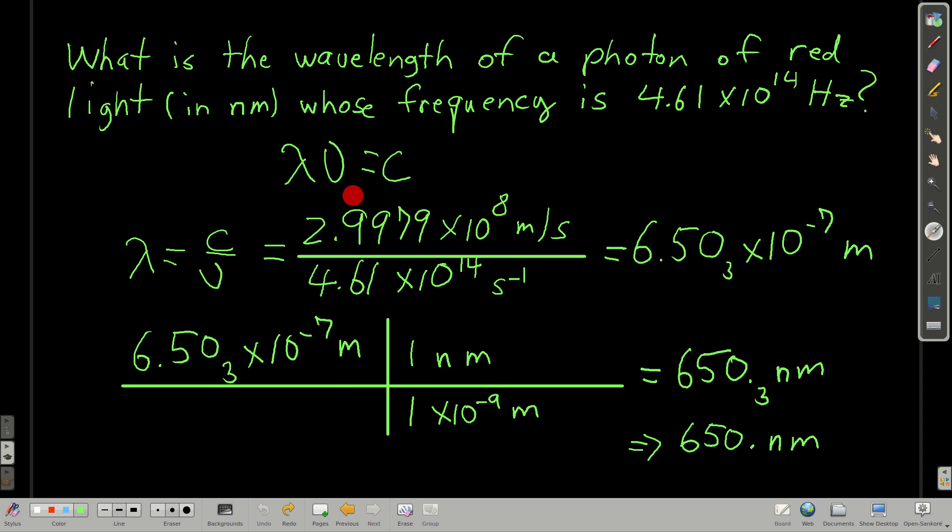Well, we just plug into this equation here, lambda times nu is equal to C. Solve for lambda because we're asked for the wavelength. Remembering that C, the speed of light is a constant that we know, going to memorize. Plugging in the frequency down here, notice hertz, inverse seconds are the same. And we get the wavelength, but it's in meters, right? That's how the units work out here. 6.50 times 10 to the minus 7th meters. And then converting into nanometers, we just replace the prefix nano with what it means, times 10 to the minus 9th. You use it as a conversion factor. And we get our wavelength, our answer is 650 nanometers.